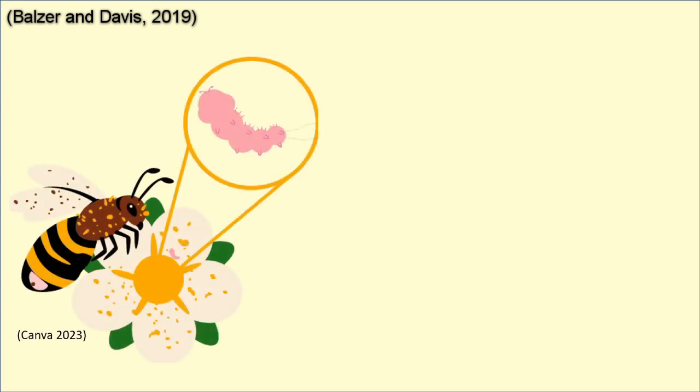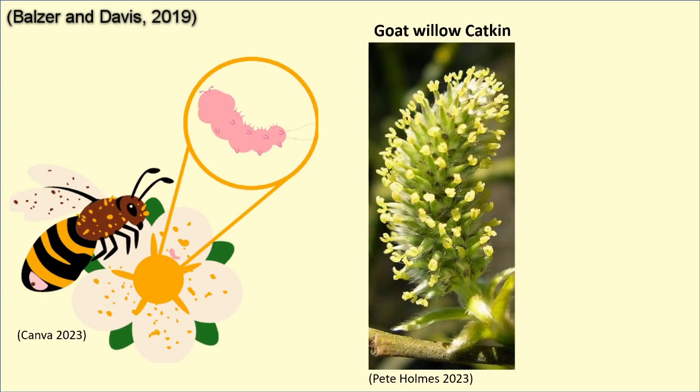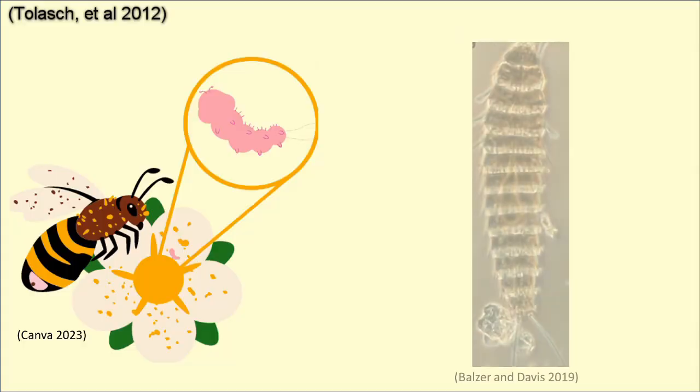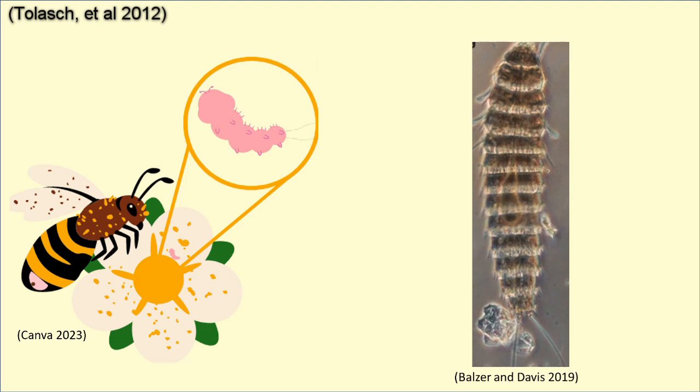Let me explain. Free-living first instar larvae are first implanted onto a flower, which is usually a willow catkin, via an opening in the brood canal of the female. Growing only 100 to 150 micrometers, these larvae are perfectly camouflaged between the grains of pollen within the flower, utilizing olfactory pits in order to assist them in detecting a bee's presence.